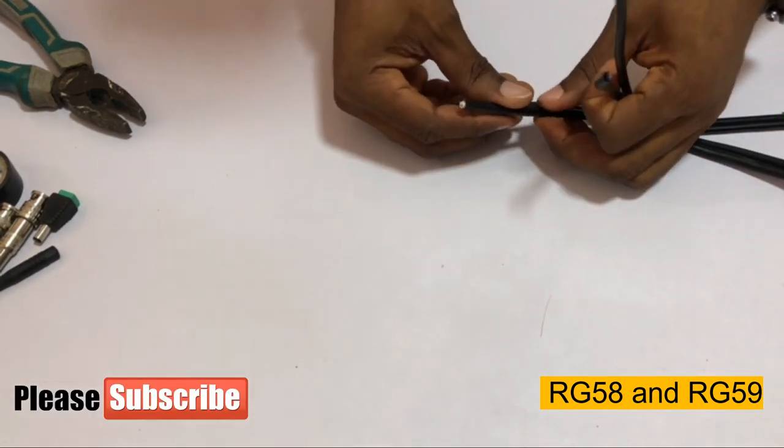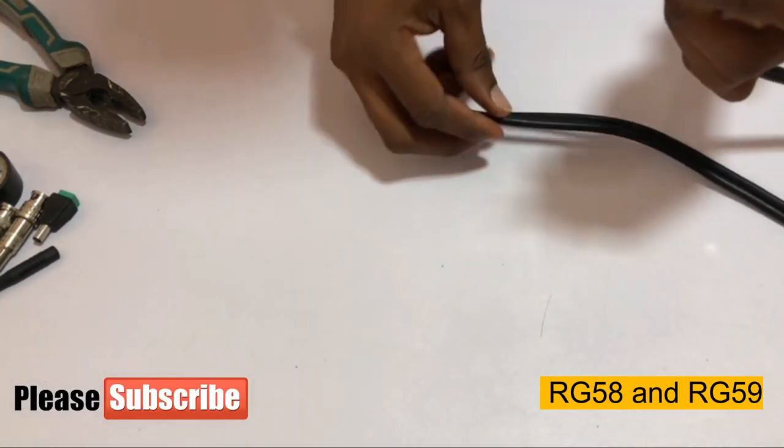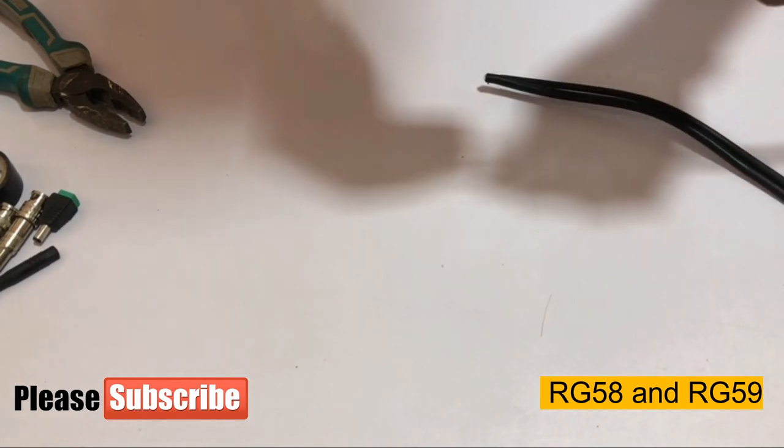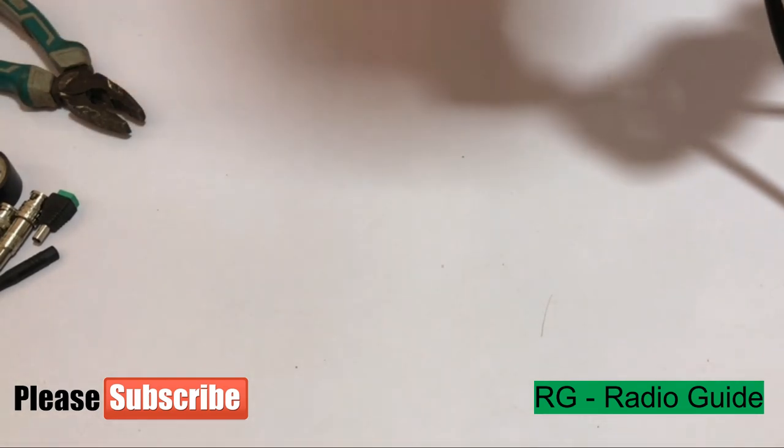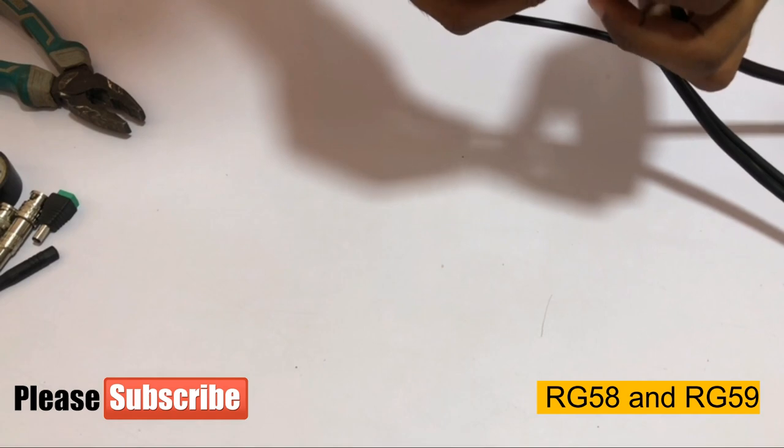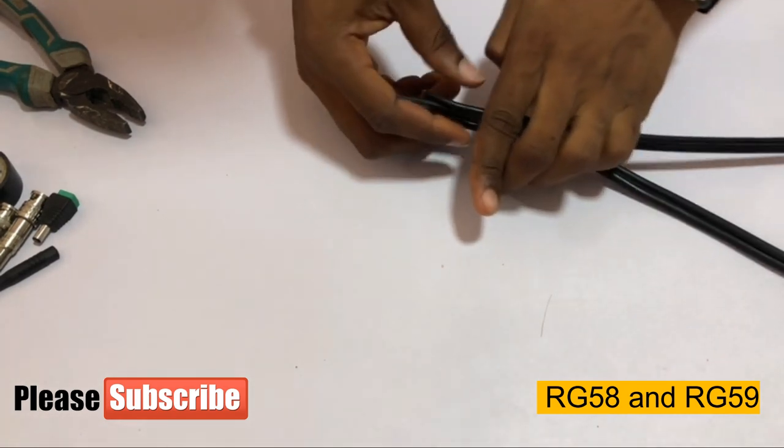Okay, the difference between these two: the RG58 has little strands, like different strands in its feed pin, while the RG59 has just one strand. I'm going to show you that in a minute.